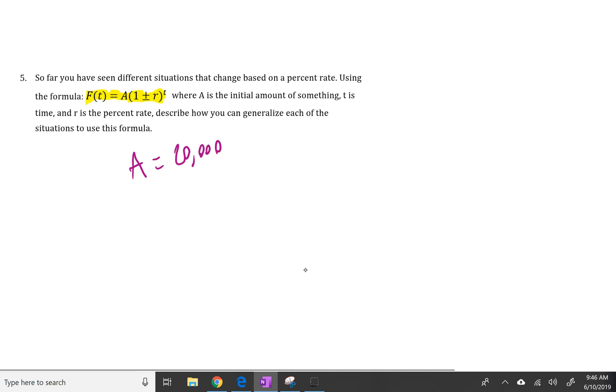So in the one formula when it was appreciating, you can see how we did 20,000 times 1 plus 0.03 to the T power, and that's where we got the 1.03 from. So that was for the appreciation in problem 1.